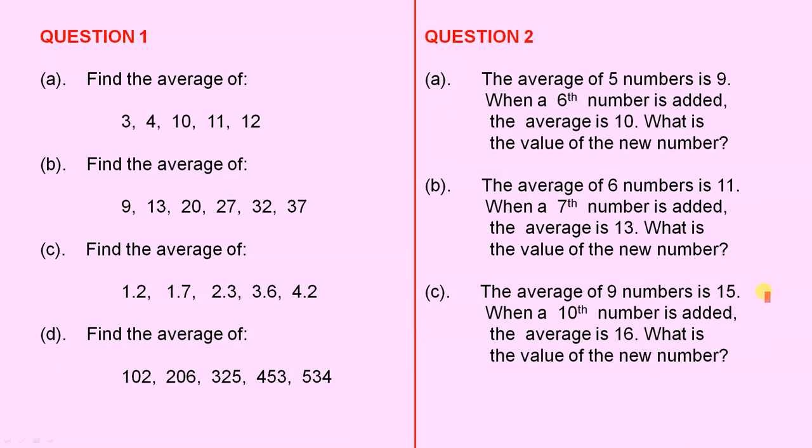Part C: The average of 9 numbers is 15. When a 10th number is added, the average is 16. What is the value of the new number?